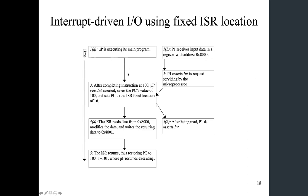Essentially, the microcontroller will execute a few things. While it's executing its main program, this peripheral may receive data, and the data will be put into its register at address 8000 in hexadecimal. Because of receiving this data, P1 will assert the interrupt signal to notify the microprocessor that you have to stop whatever you're doing and get this data out of the peripheral. So the microcontroller will say: okay, let me finish the current instruction, which could be at address 100. The microcontroller sees this interrupt signal and the pin is asserted, so it will save the PC — program counter.